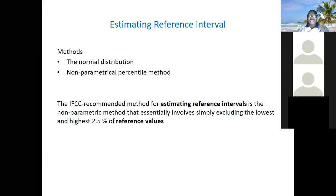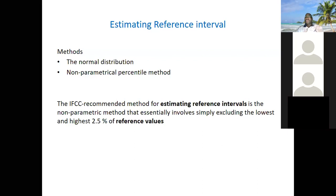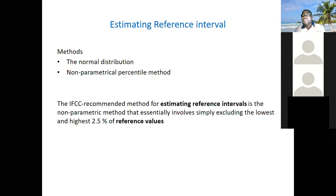The International Federation of Clinical Chemistry and Laboratory Medicine recommends the non-parametric percentile method. It involves simply excluding the lowest 2.5 percent and the highest 2.5 percent of results. You arrange the results from lowest to highest, exclude the first 2.5 percent and the last 2.5 percent — together that is 5 percent — leaving the middle 95 percent, from the 2.5th to the 97.5th percentile. That middle 95 percent is the reference interval.